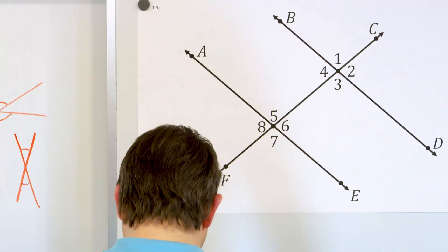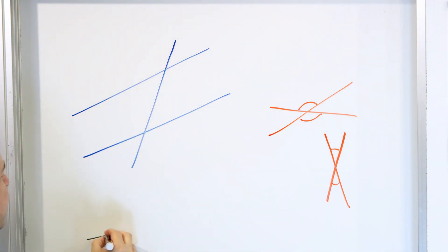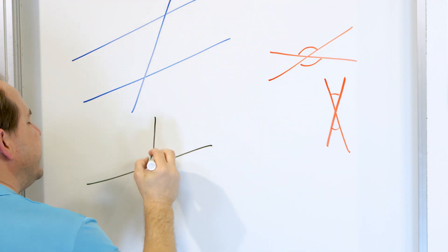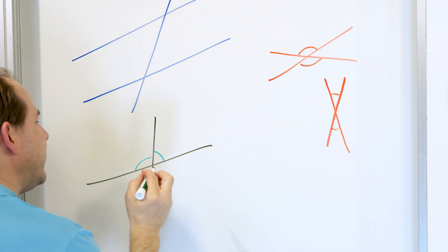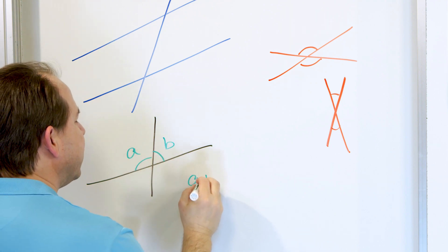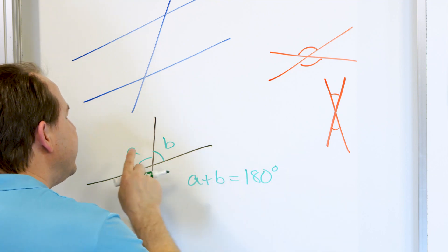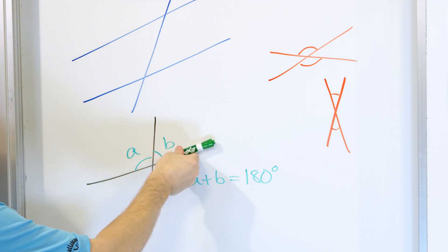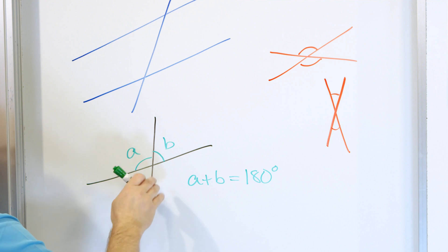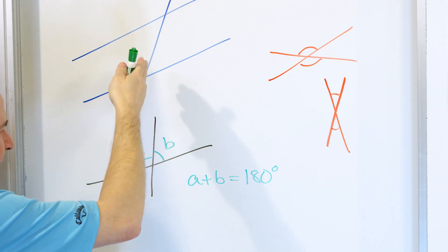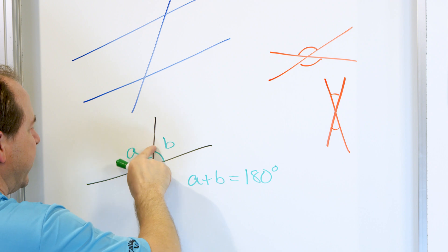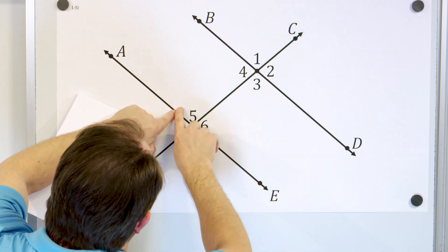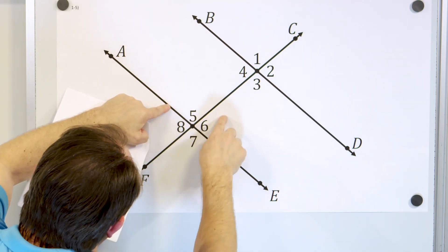Supplementary angles — if you have a line and some line crosses it, angle A and angle B on either side are supplementary, meaning A plus B must equal 180 degrees. The angle here plus the angle here always adds to 180. That's because a straight line is 180 degrees all the way over, so if you cut it by some fraction, both parts must add up to 180. So angle five and angle six were supplementary — they add up to 180 degrees.